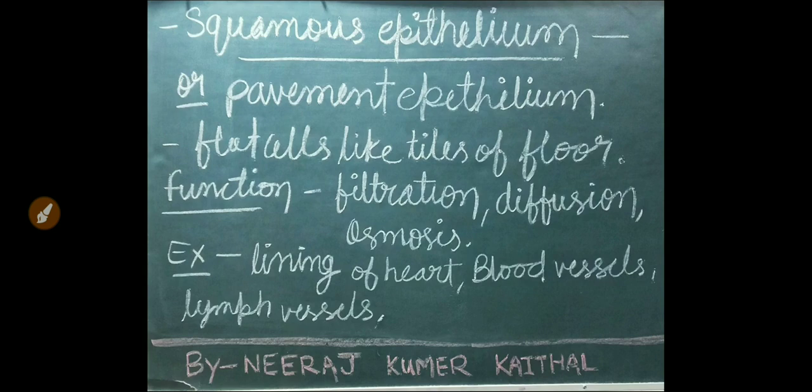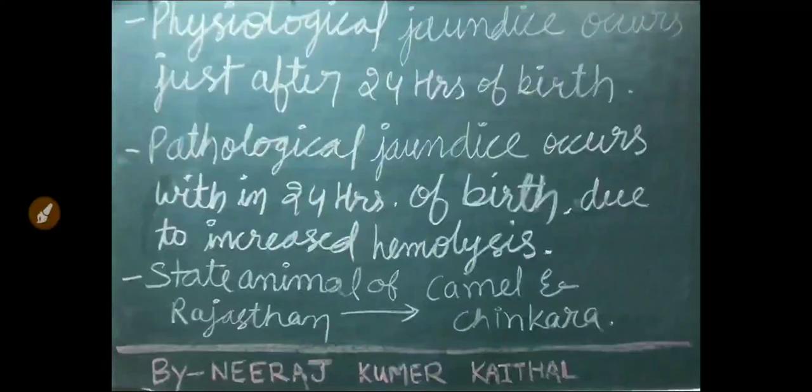Thermogenesis is heat production; thermolysis is loss of heat by physical regulation. Squamous epithelium, also known as pavement epithelium, consists of flat cells like floor tiles. Functions include filtration, diffusion, and osmosis. Examples include cell linings of the heart, blood vessels, and lymph vessels.